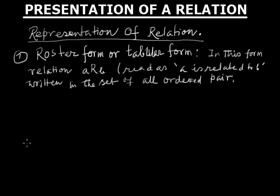Hello friends, now we'll discuss how many ways we can represent a relation. First one is roster form or tabular form. In this form, the relation a related to b is written in the set of all ordered pairs.